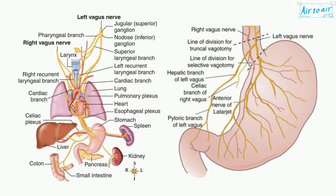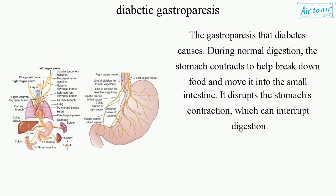Diabetic gastroparesis is the gastroparesis that diabetes causes. During normal digestion, the stomach contracts to help break down food and move it into the small intestine. Diabetes disrupts the stomach's contraction, which can interrupt digestion.